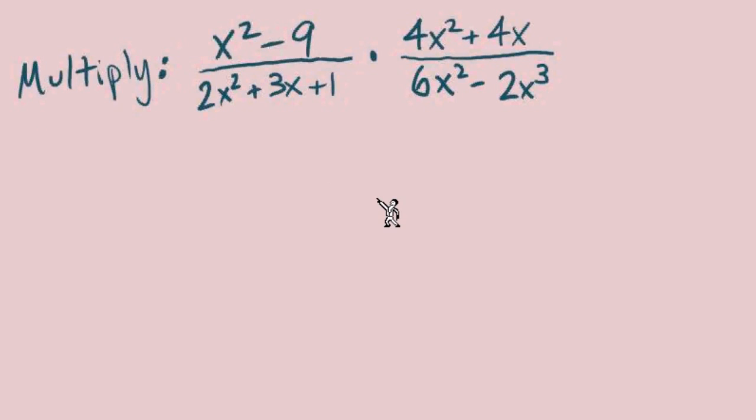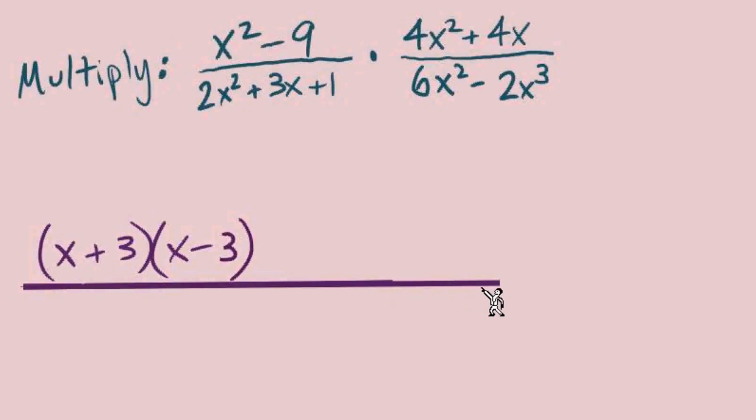So we know the steps: factor then cancel. I will set up a new fraction here. x² - 9, there's our difference of squares, (x + 3)(x - 3). Next, let's go for the other numerator.